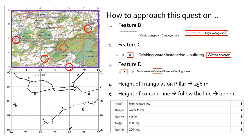Remember for this question, how the symbols are laid out corresponds exactly to the order in which they are defined in the key. So for example, back to feature C — the symbol is the last one, therefore it refers to the last entry in the key order.